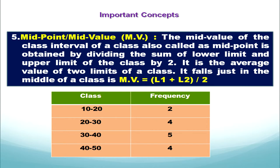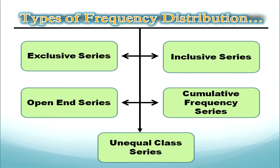Each class is having the same gap. So once we know the first midpoint and if the series is exclusive, we can easily know the next midvalues. The first midvalue is 15, the second is 25, the third is 35, and the fourth is 45. Now that we are done with the concepts of frequency distribution, we can construct different types of frequency distribution.